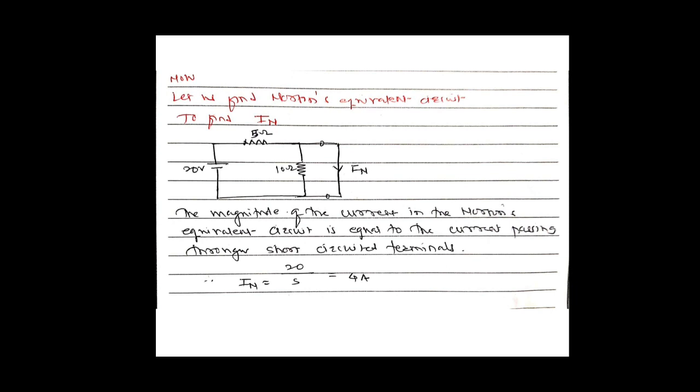To find the Norton current, we short circuit the two terminals of the network — that is, we remove the 6-ohm resistance and short circuit that terminal. The current through that short circuit terminal is the Norton current. IN = 20 V / 5 ohm = 4 A. So the Norton current obtained from the original circuit is 4 A.